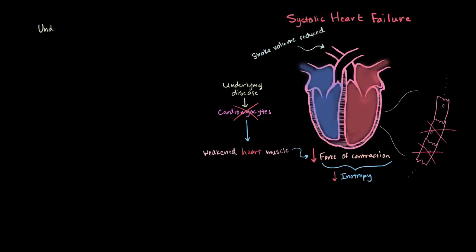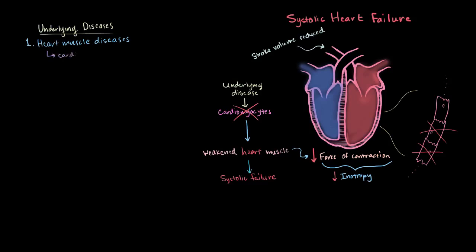So what are some of these underlying diseases? You essentially have four categories. The first category is heart muscle diseases — a lot of times we call those cardiomyopathies. You can break that down into cardio (heart), myo (muscle), and pathy (disease). Typically the cause is unknown, but in general they weaken the heart muscle and make it harder to pump blood.